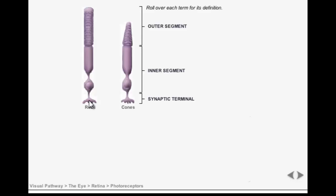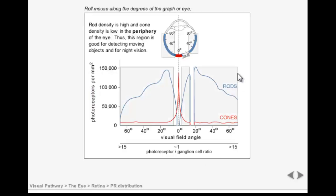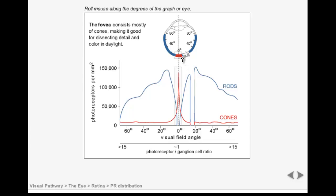There are several key differences between rods and cones, as we will see in just a moment. First, let's take a look at the distribution of rods and cones in the retina. The fovea is the central point of focus and is made up mostly of cones. This is the red line. As we travel away from the fovea in either direction, the number of cones decreases dramatically and the number of rods increases.